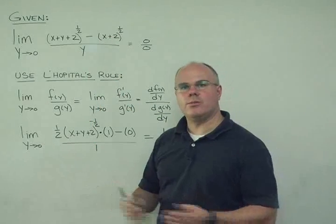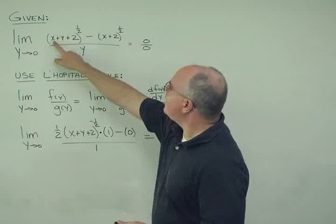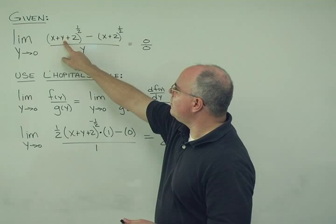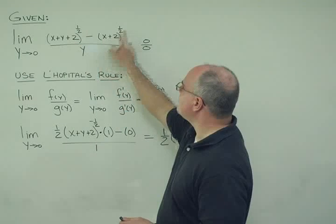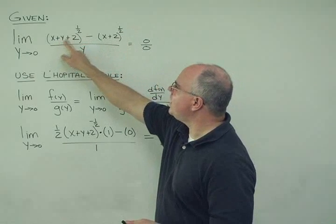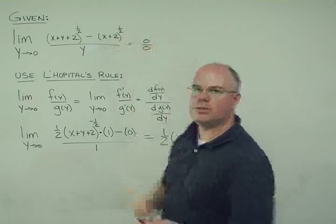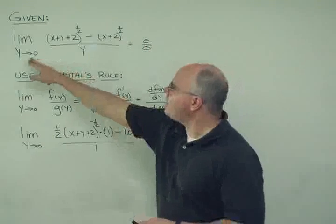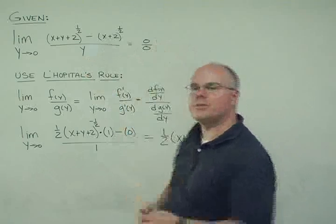Now if we substitute y in directly, what do we find? Well, we get (x+0+2)^(1/2) - (x+2)^(1/2). So this becomes (x+2)^(1/2) - (x+2)^(1/2). Well that's equal to zero, identically, and the denominator is also zero, so we end up with a situation of zero over zero.